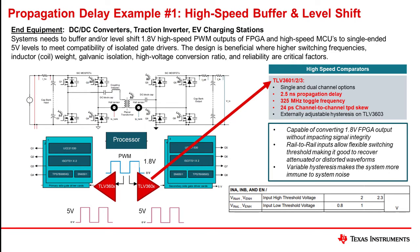For power conversion and switching applications, the faster prop delay ultimately yields better performance for the end equipment, making it more efficient through generating a smoother output waveform and reducing the size requirement of inductive coils. In weight-constrained EV applications, this can make a difference with lower weight for smaller coils.